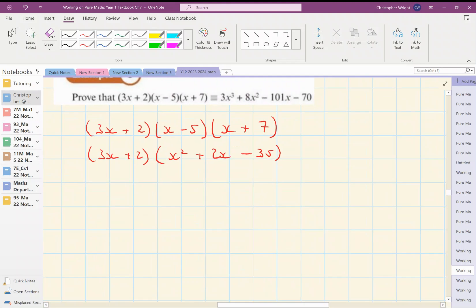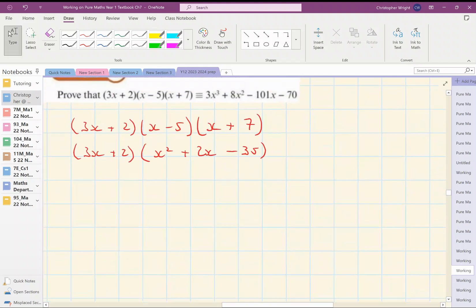And now I'm going to multiply the second bracket by the first. I'm going to do 3x multiplied by everything in the second bracket. So let's do that first. So 3x times x squared, 3x cubed.